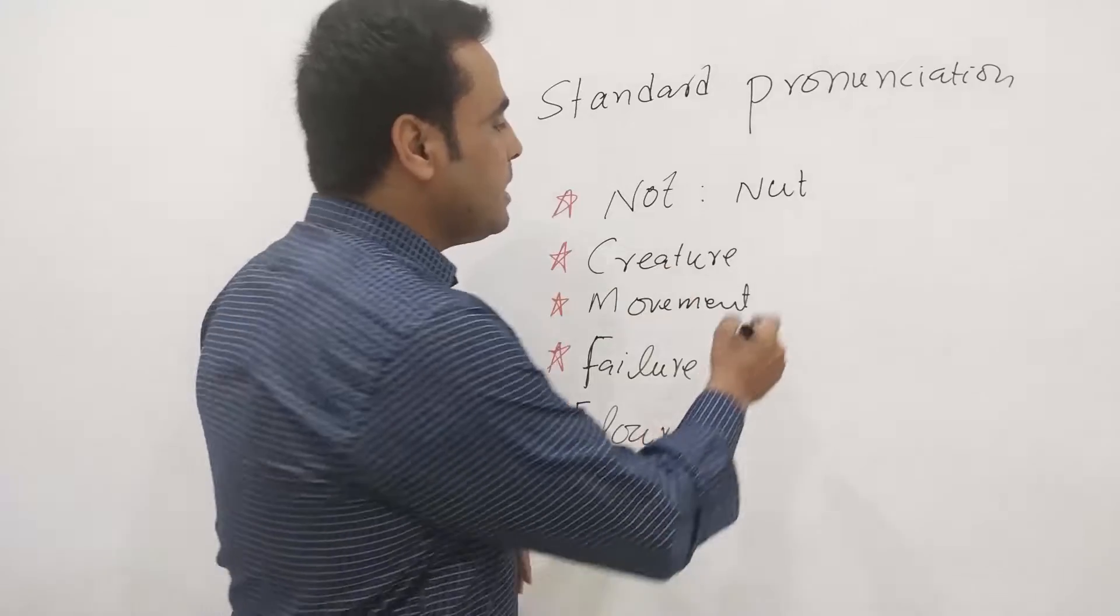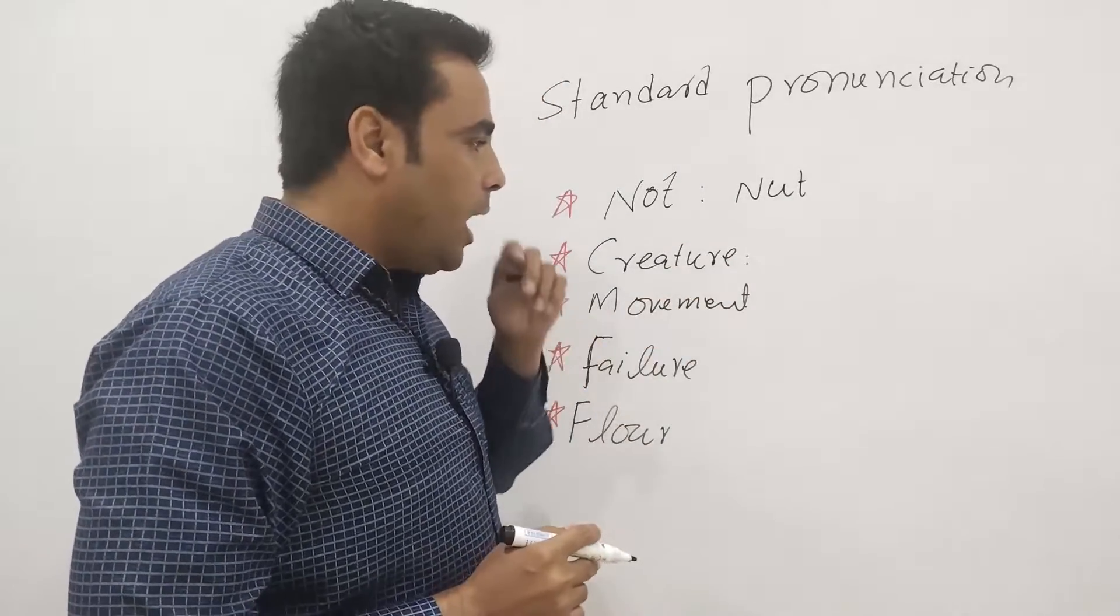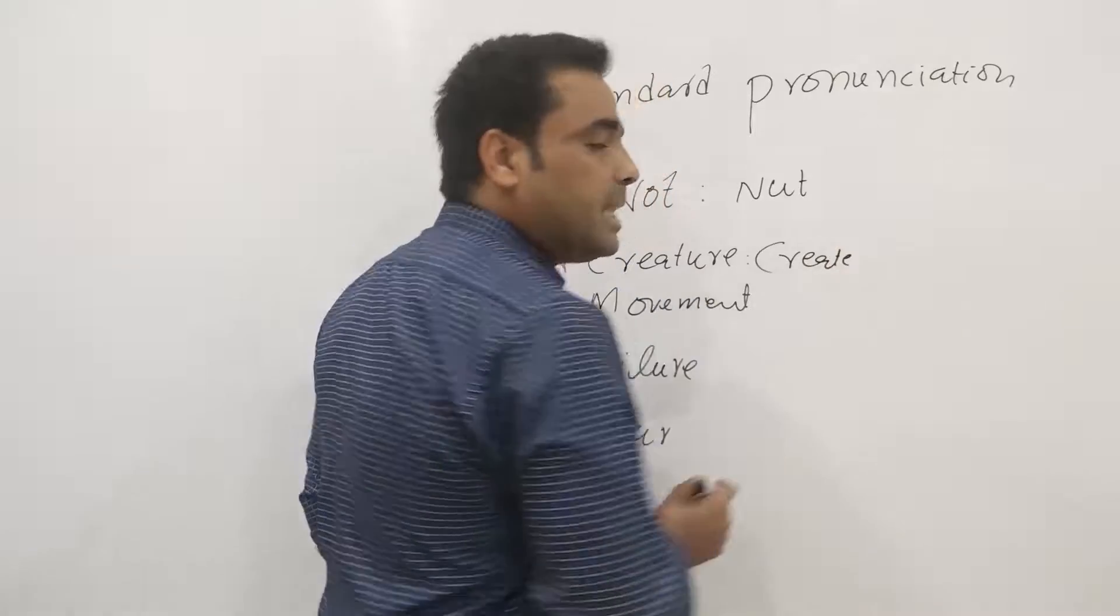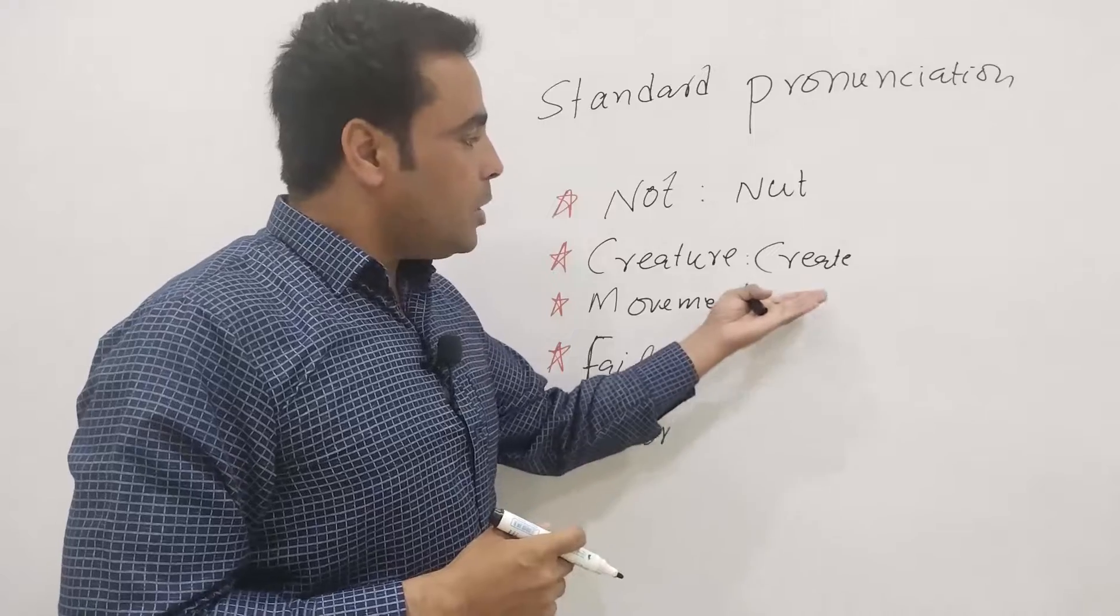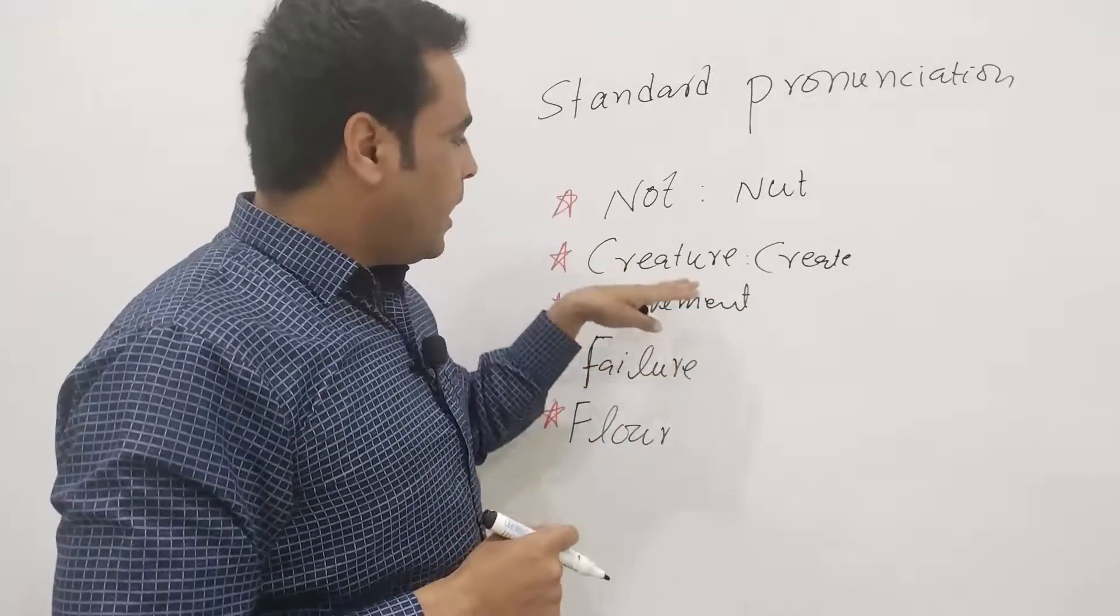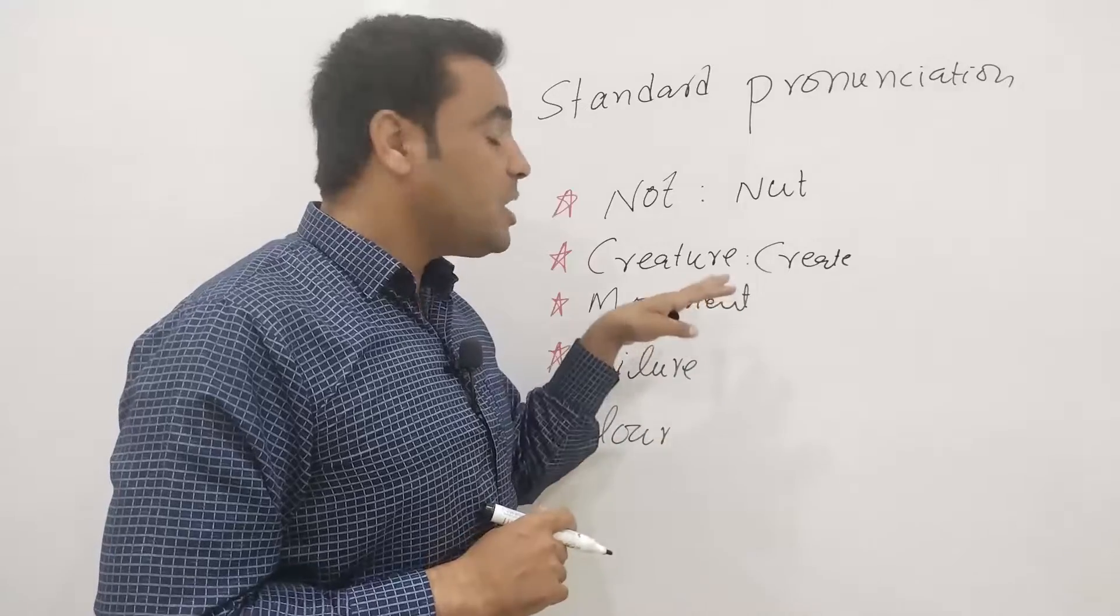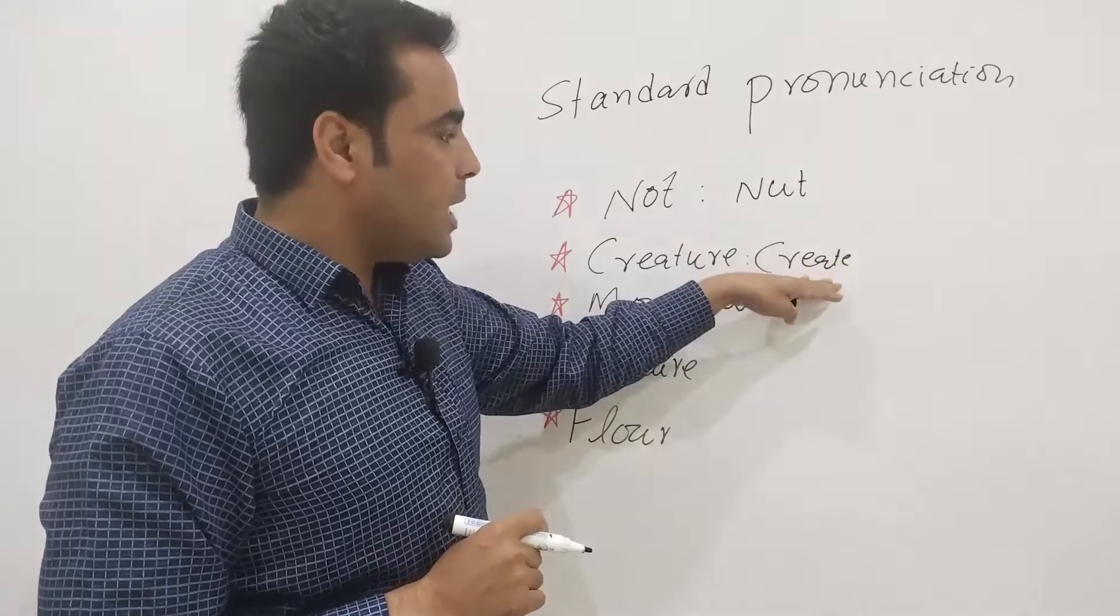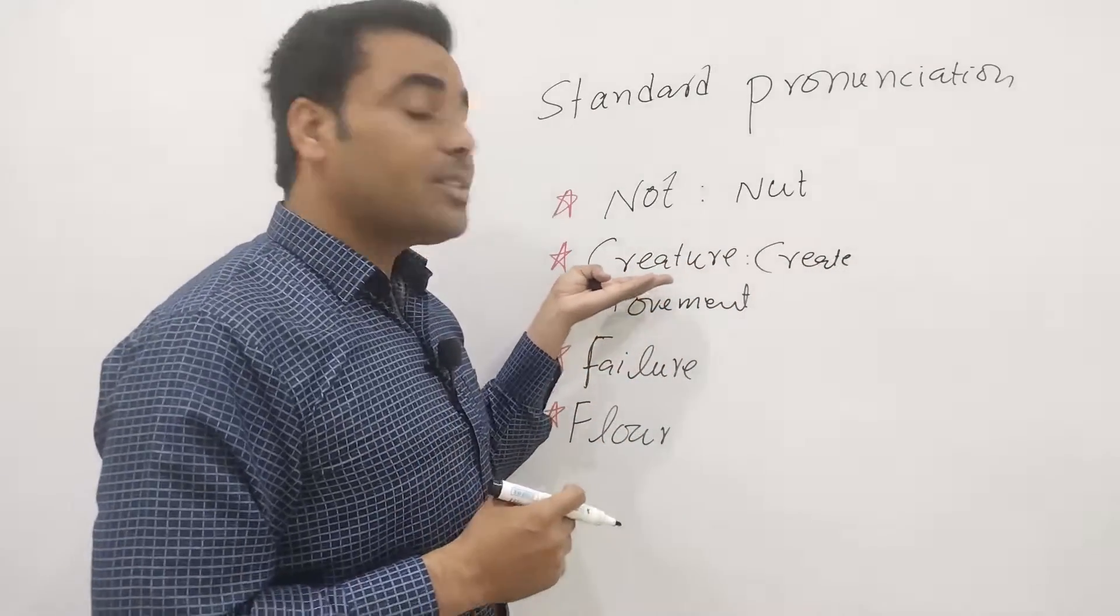The next word is creature. We pronounce it creature. Why do we pronounce it creature? Because we have the word create here - create is a verb. When we pronounce this word, we pronounce it as creature. In fact, this is the exact pronunciation: creature. Creature is not creature, creature is creature.